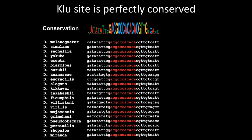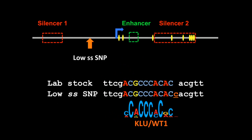So this clue site is actually perfectly conserved across all 21 Drosophila species, suggesting that so this covers 50 million years of evolution and suggests that this site may be functionally relevant.